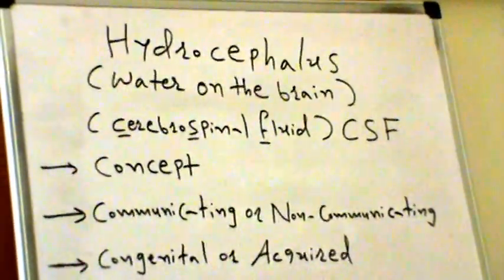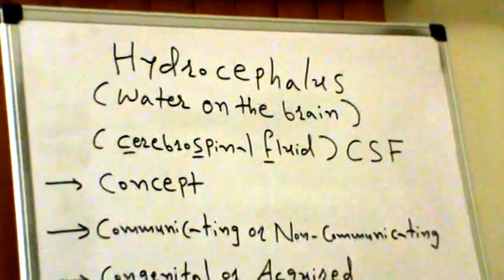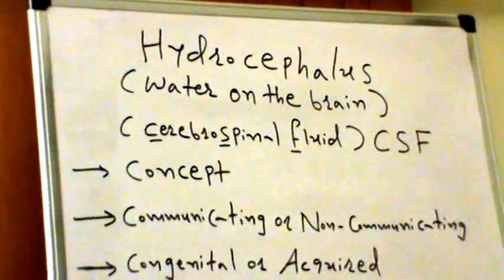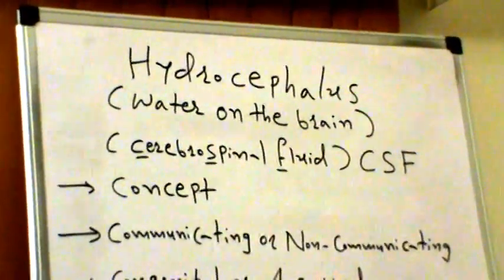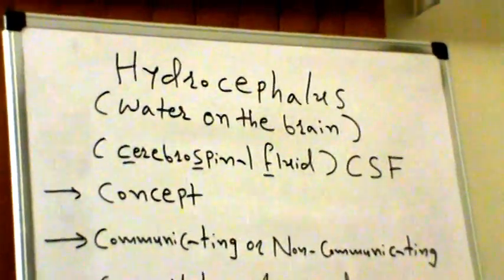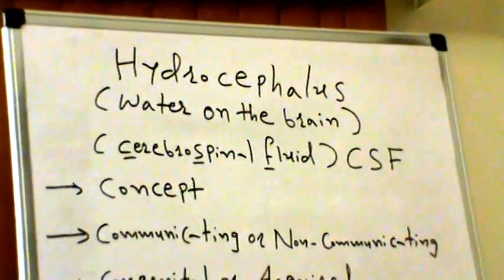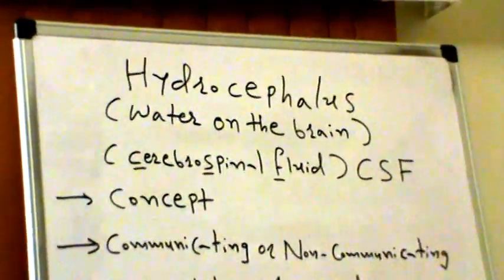Hydrocephalus occurs when there is an imbalance of production and/or absorption. With most types of hydrocephalus, the fluid gets trapped in the ventricles and cannot complete its circulation, usually due to a blockage.